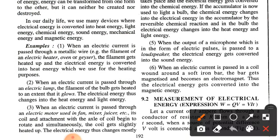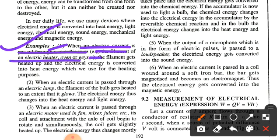The first example: when an electrical current is passed through the metallic wires — that is the filament of an electric heater, oven, or geyser — the filament gets heated up and the electrical energy is converted into heat energy, which we use for heating purposes.